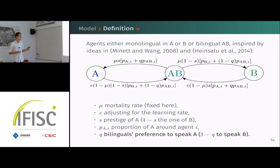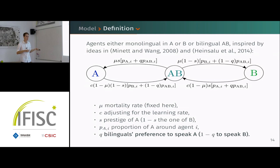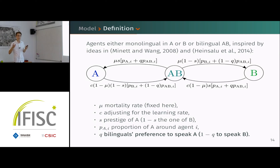For bilinguals, there is an additional term q in front, which is the original contribution of our model. It modulates the influence of bilinguals because they might prefer to speak one language over the other for cultural reasons. I will show that this is crucial for some kinds of coexistence that we observe.